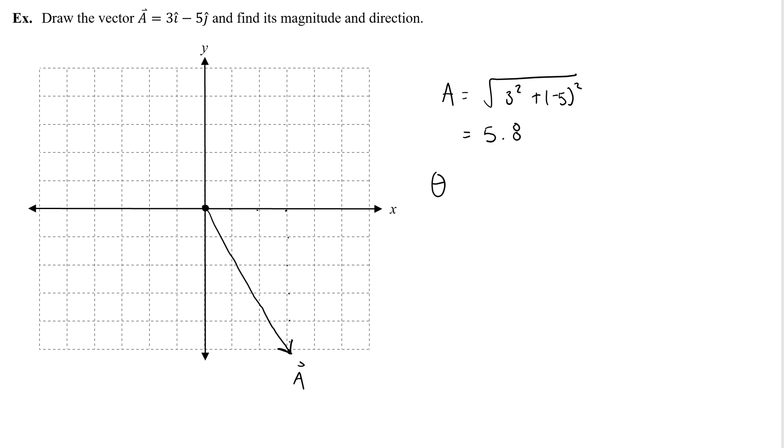And the angle is tangent inverse of the y over the x. But again, I would use negative 5 over 3. And that's going to give me, when I do tangent inverse of negative 5 over 3, I get a negative 59.03, so negative 59.0 degrees. And it's in the fourth quadrant, so that angle is correct. The negative just tells me that it is underneath of the x-axis.